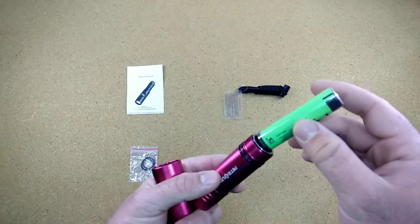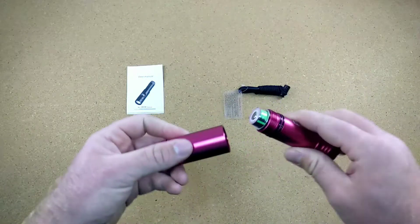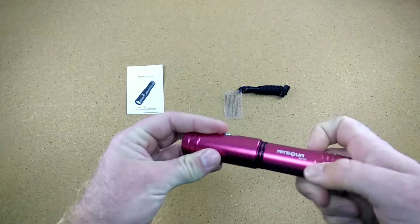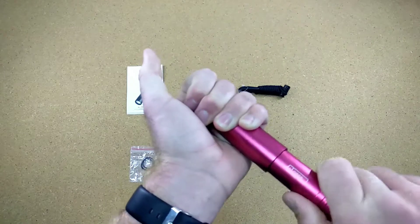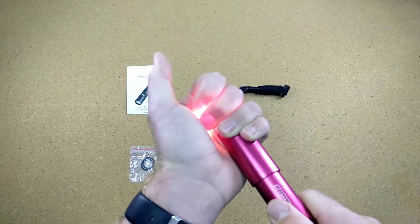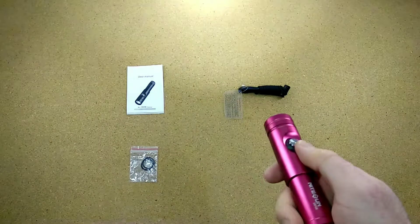Now I am going to just take a generic 18650, one of mine, as the light did not come with one in this case. And I am just going to close it. Now this thread really closes nice. You don't need many rotations. It is really very smooth, very easy. And they have a good hexagonal thread.